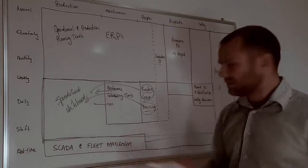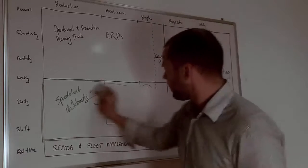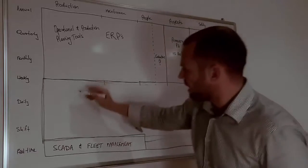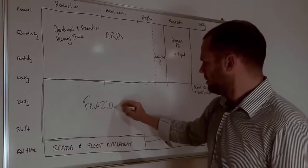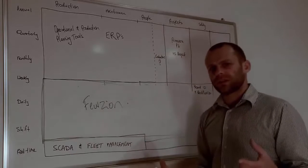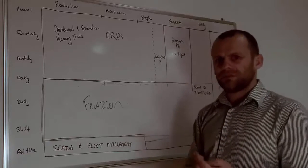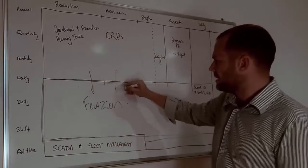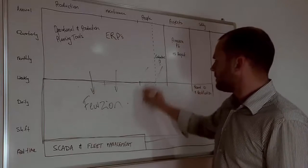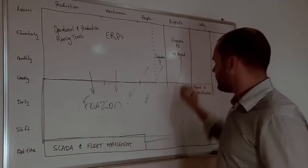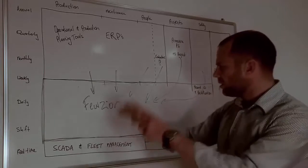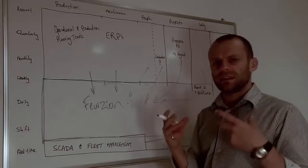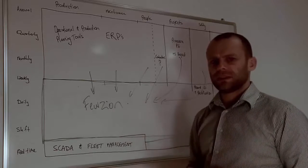So what Fewzion does is it can replace all of these tools at the front line. So it connects in to all of these tools so that you have one single source of truth for all of the work that's going to happen on a site, in real time, on the shift, on the day and on the week. Taking data from your production plan, your ERPs, has contractors and employed people, has all your project information, any safety tasks that need to be done. All of that work is in one plan for the supervisor and for the management team so they can see what work is going to be done today and manage it effectively day in, day out.